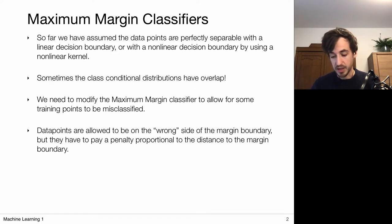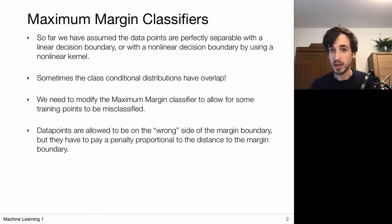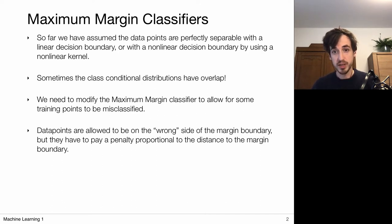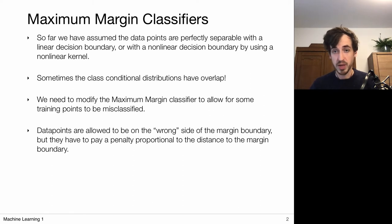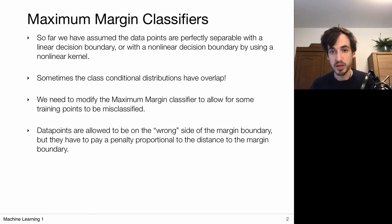In practice we can expect that the conditional distributions have overlap, so some points may fall on the other side of the decision boundary — it's inevitable. We are going to reformulate this maximum margin classifier to allow for some training points to be misclassified. We will work with a sort of adaptive margin where in most cases we still have the regular maximum margin, but we allow some points to lie on the wrong side of the margin boundary, penalizing them.